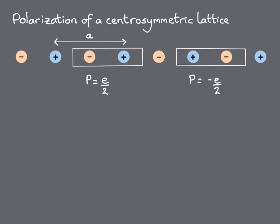We obtained different answers depending on the unit cell. The unit cell on the left, for example, has polarization P = e/2, and that on the right, P = -e/2, where e is the electronic charge.